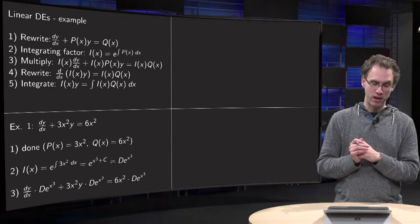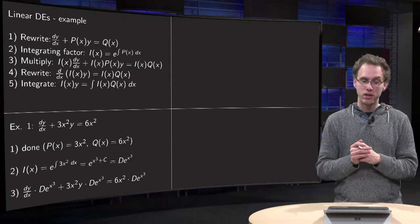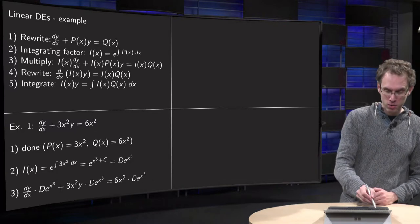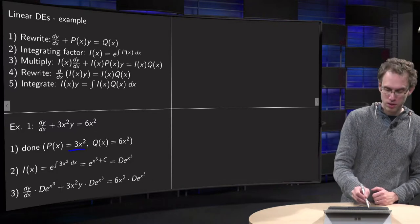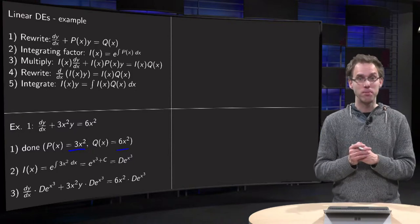dy/dx plus 3x² times y equals 6 times x². Well, you'll see that we have already done step one. We can find p and q: p equals 3x² and q equals 6x². So on to the second step, find the integrating factor.